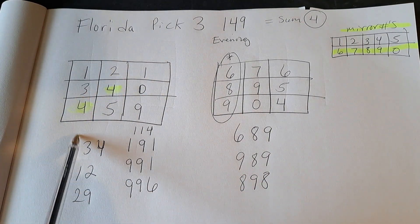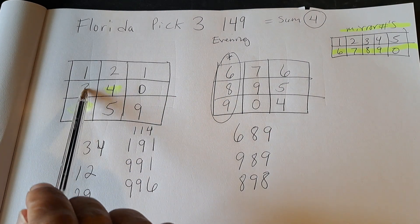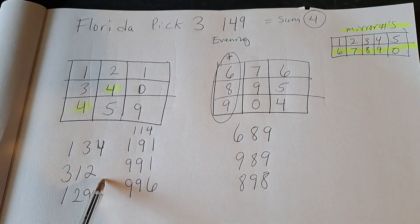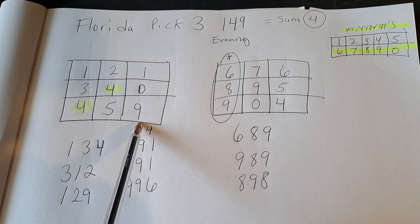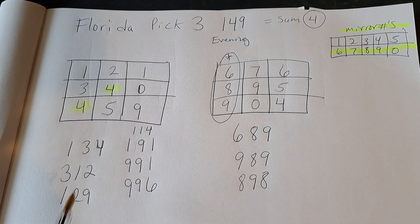So I'm really liking going vertically right here, the 134. That's a good one. I see 312. I like that one. And I'm also liking 129 even though it doesn't connect. I just like that number to follow the 149 as well.